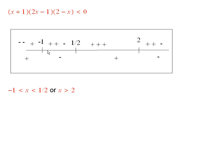So, if I look at something in here, it must be either positive or negative. Now, when you look at the factors, I have two positive factors and one negative factor. So, between negative 1 and 1 half, the product of these is negative.